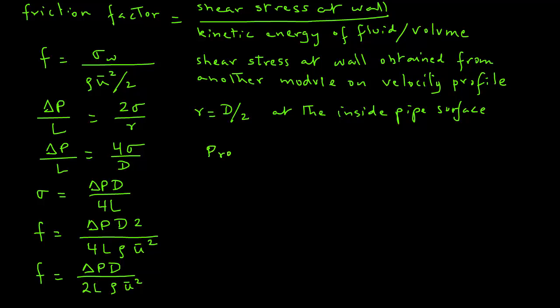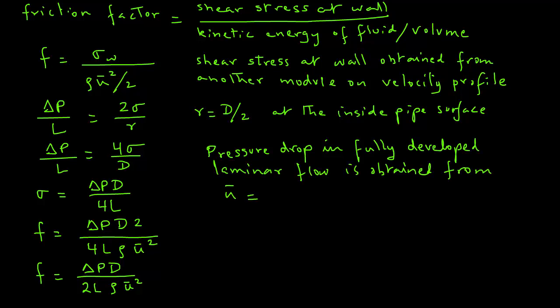And again, going back to our previous module on the velocity profile in a pipe, where we had obtained pressure drop in a fully developed laminar flow. And in that, we had obtained an expression for the average velocity u bar equals delta p R squared divided by 8 mu L.